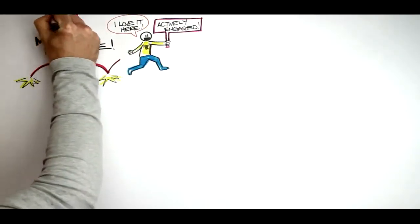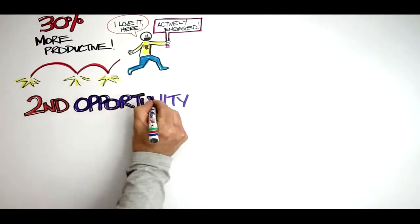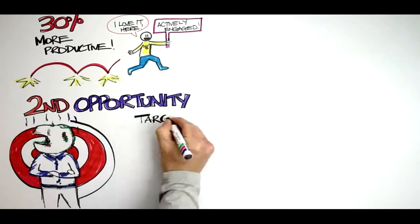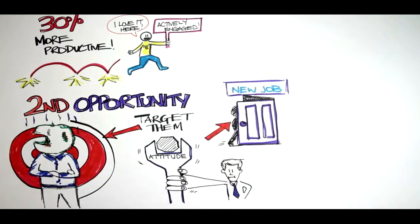So it's essential that leaders work this sweet spot. A leader's second opportunity is to disengage people, or bad apples. Target them as well. Help them adjust their attitudes or help them find another job.